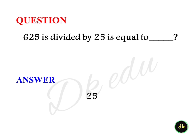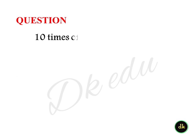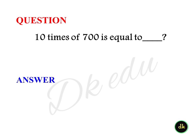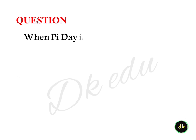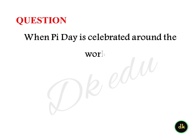625 divided by 25 is equal to? Answer: 25. 10 times 700 is equal to? Answer: 7000. When is Pi Day celebrated around the world? Answer: March 14th.